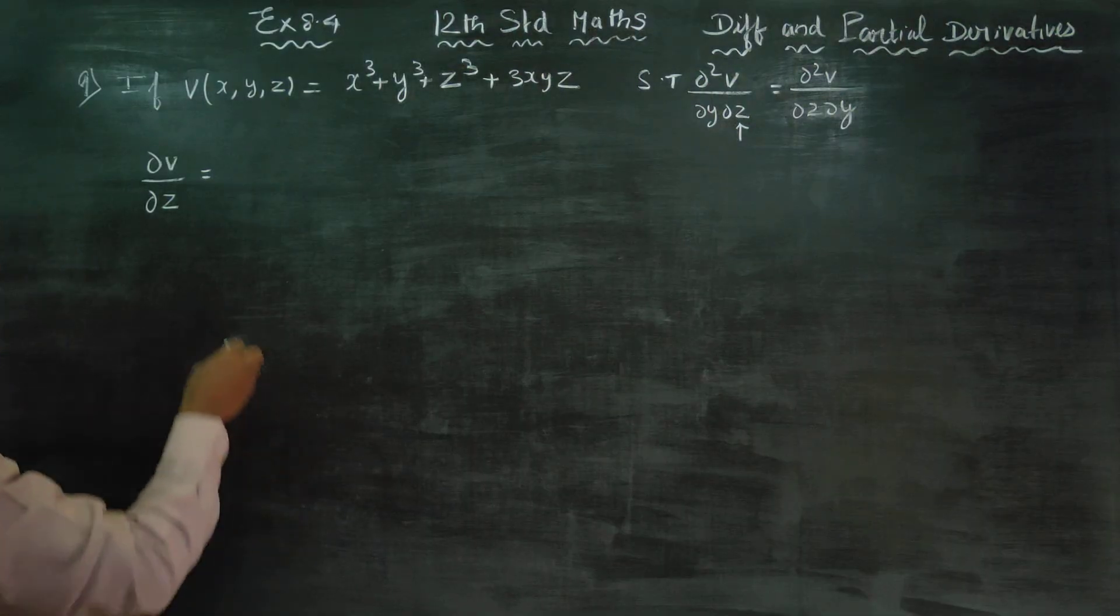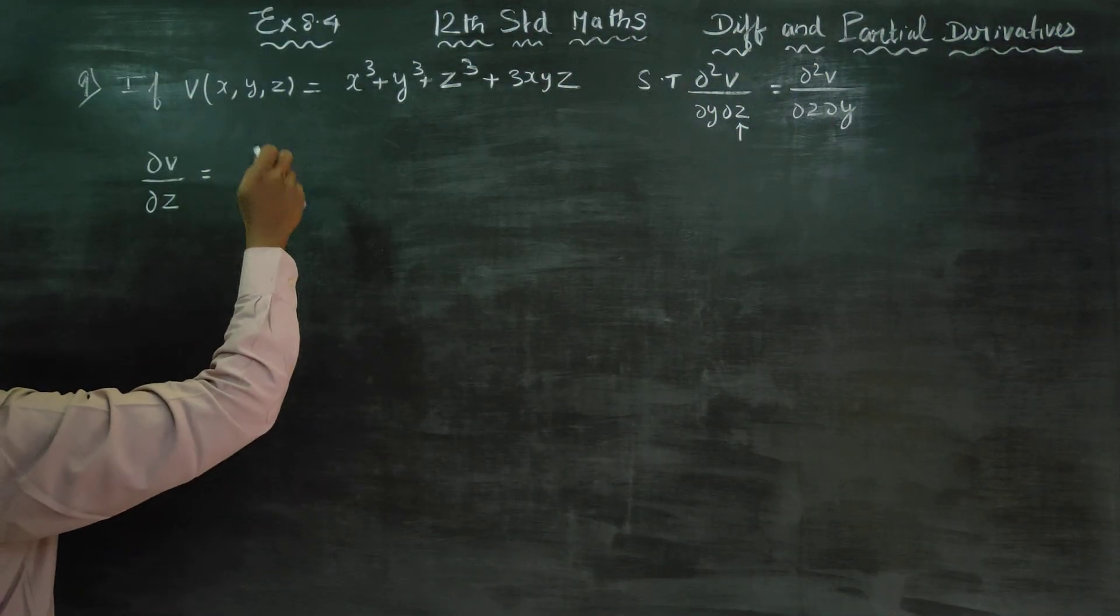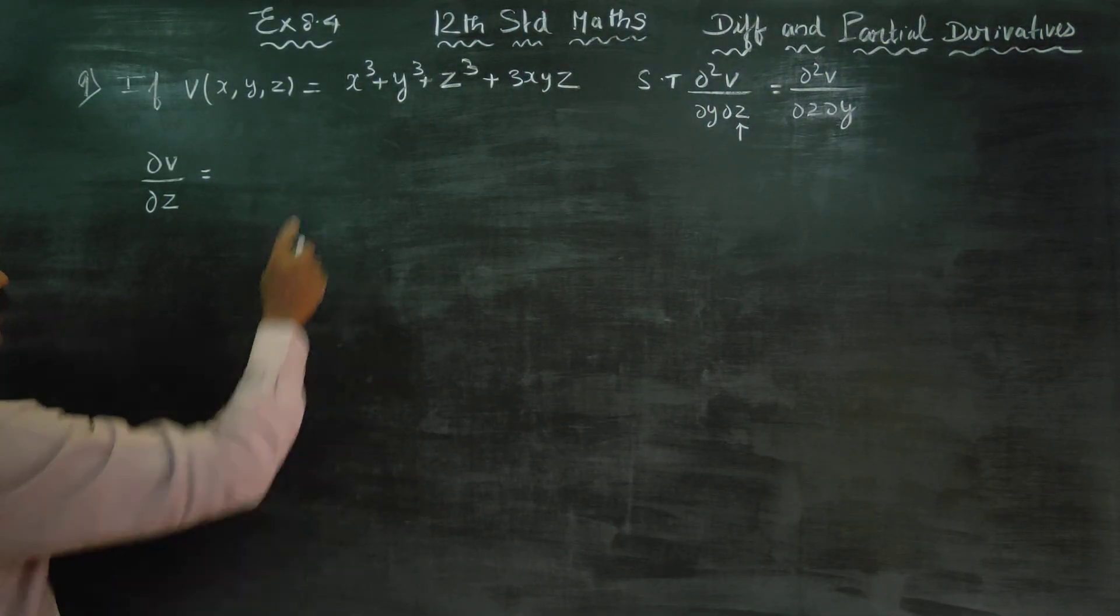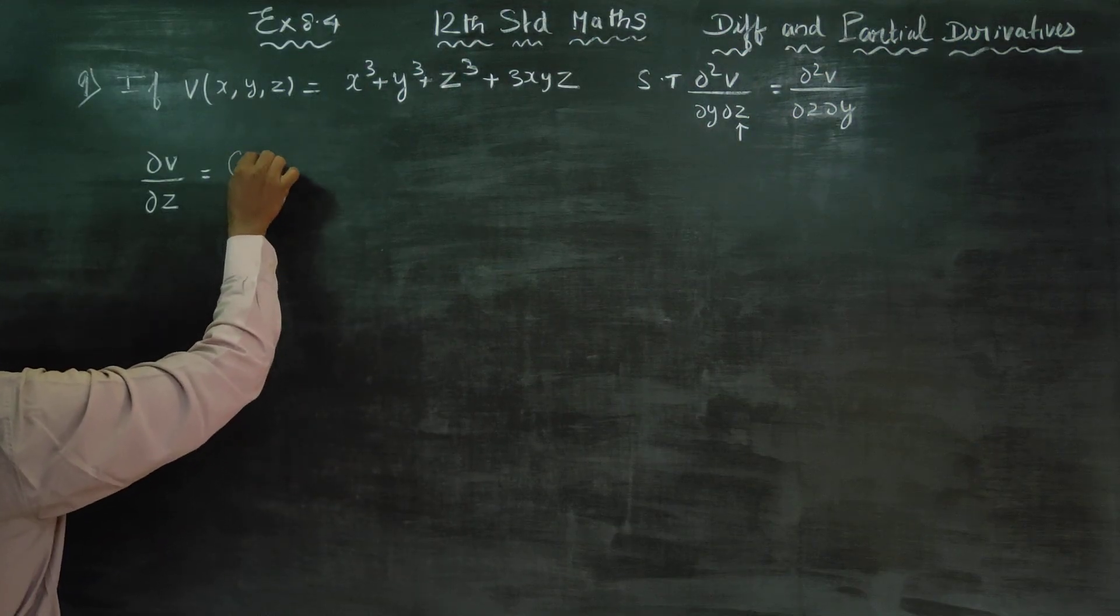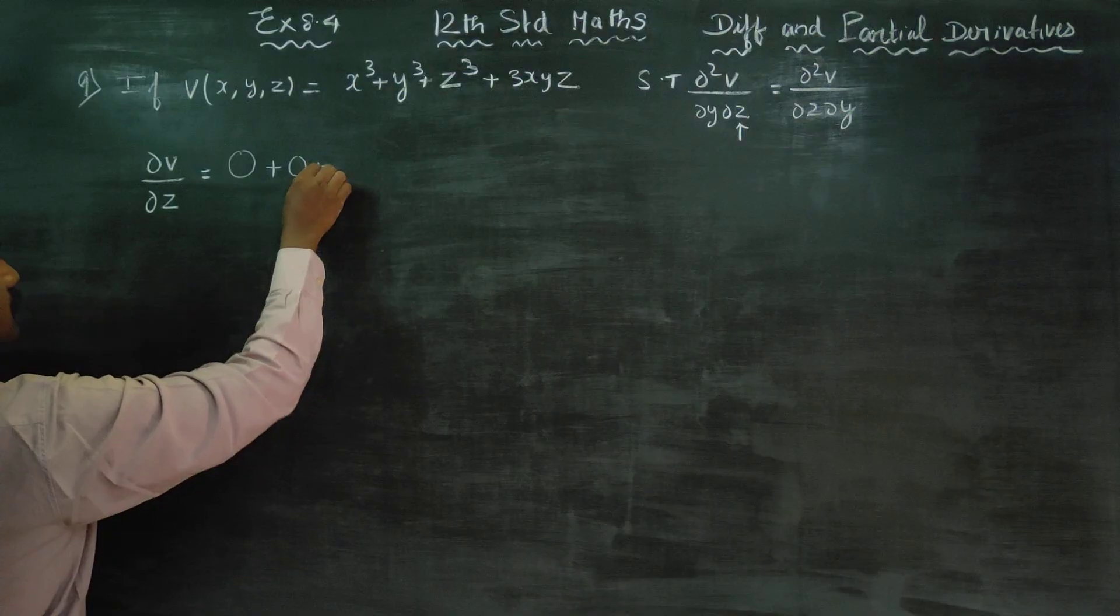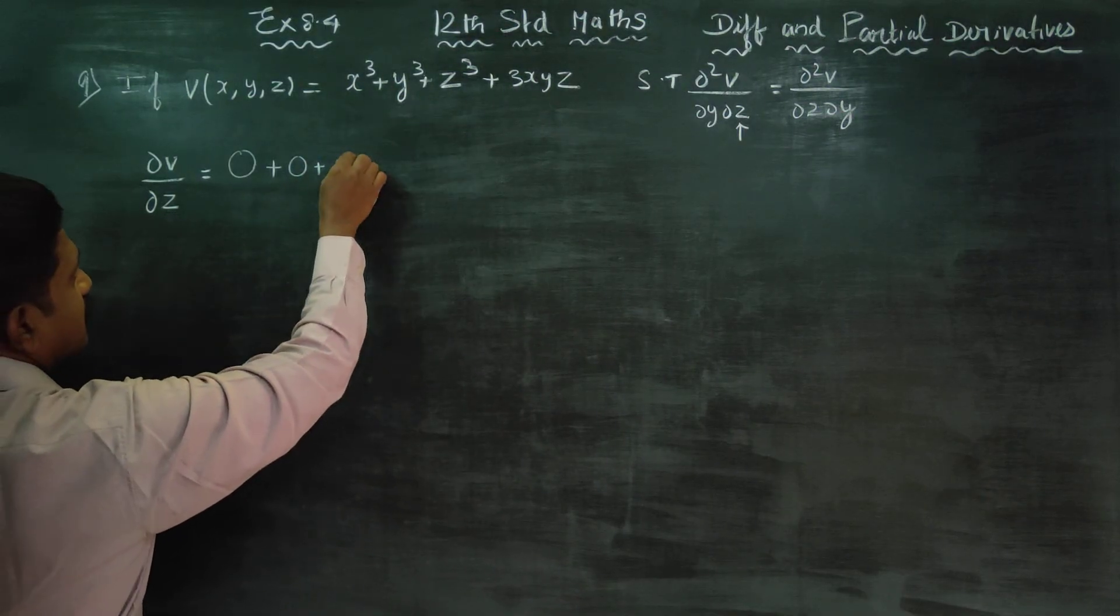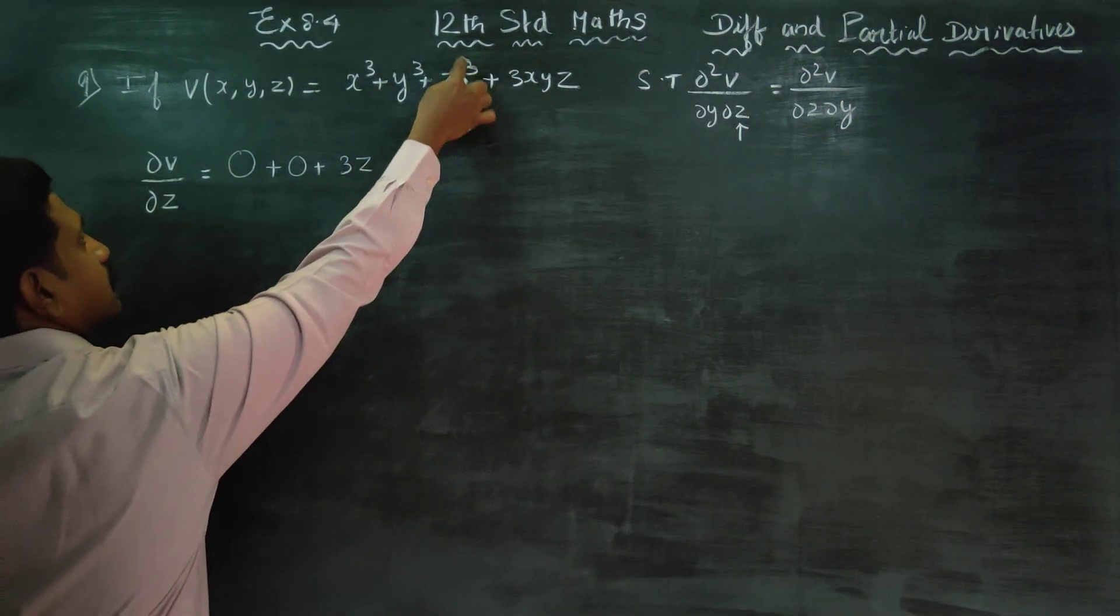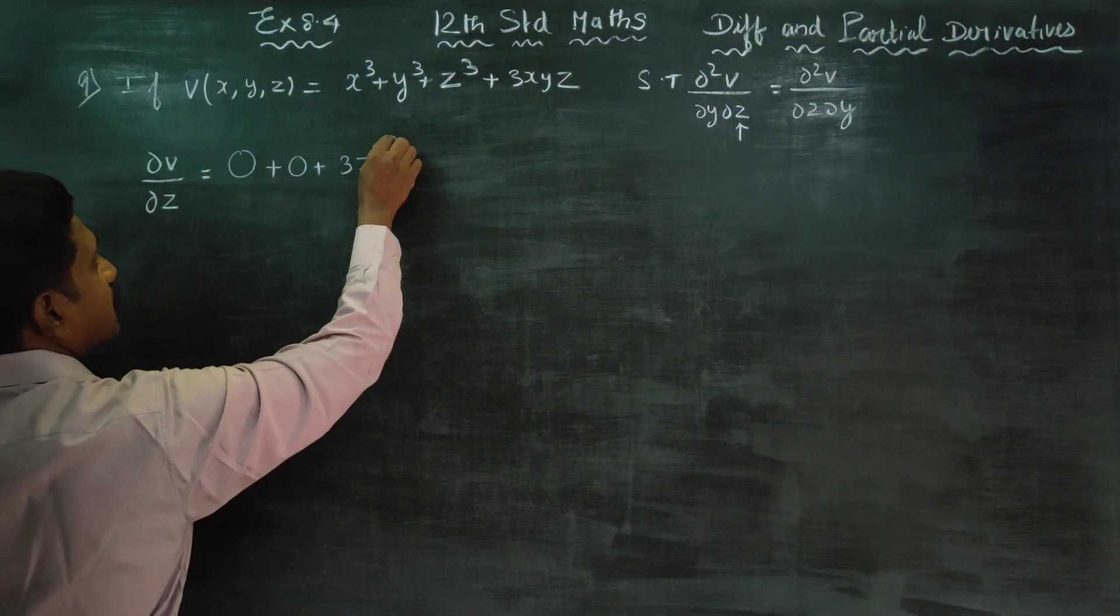So z is differentiate. This is x constant, y constant. So x is constant and differentiate. Y is constant and differentiate. And z is differentiate: 3, 3, 1, one less gives 2.